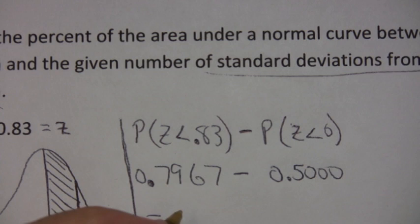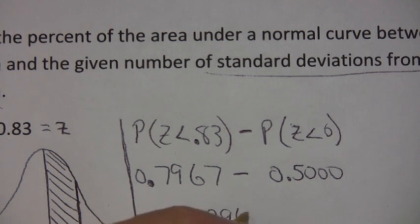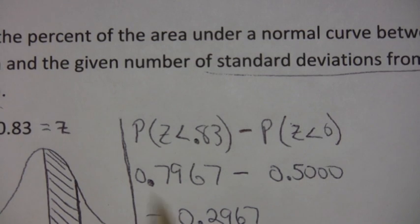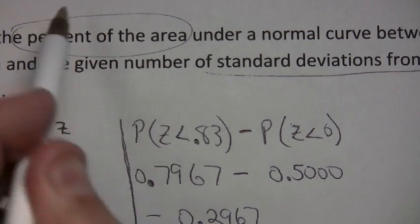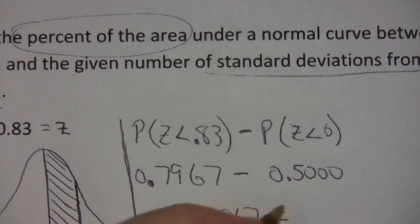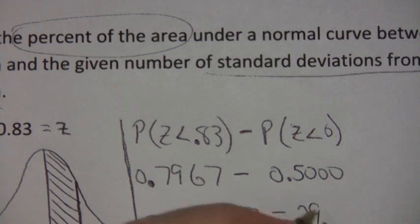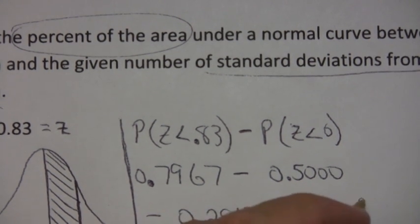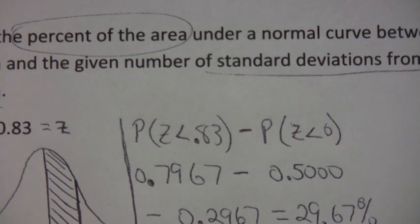And you end up with, if you do that subtraction, 0.2967. They ask for the percent of the area, so if you want to change that to a percent, that would be 29.67%. Remember, when you change something to a percent, you move the decimal two places to the right.